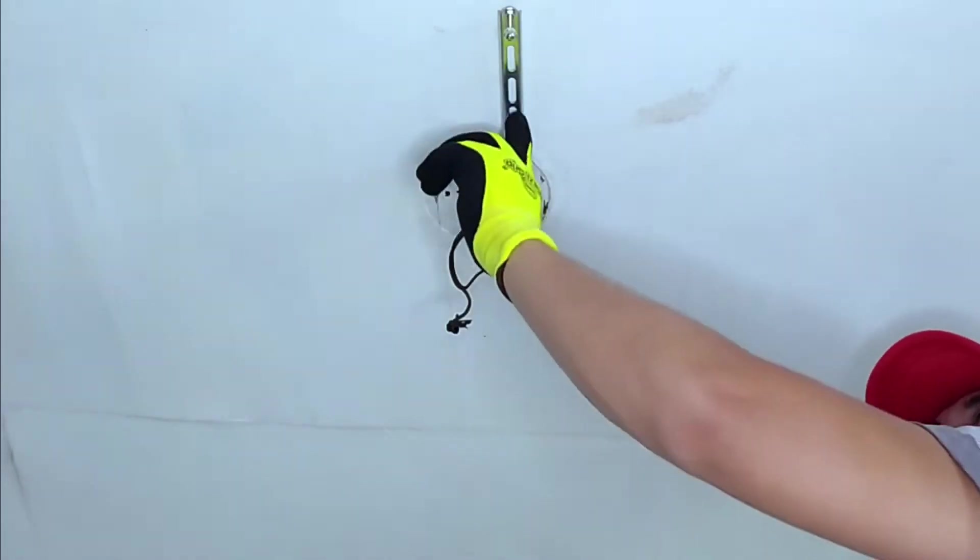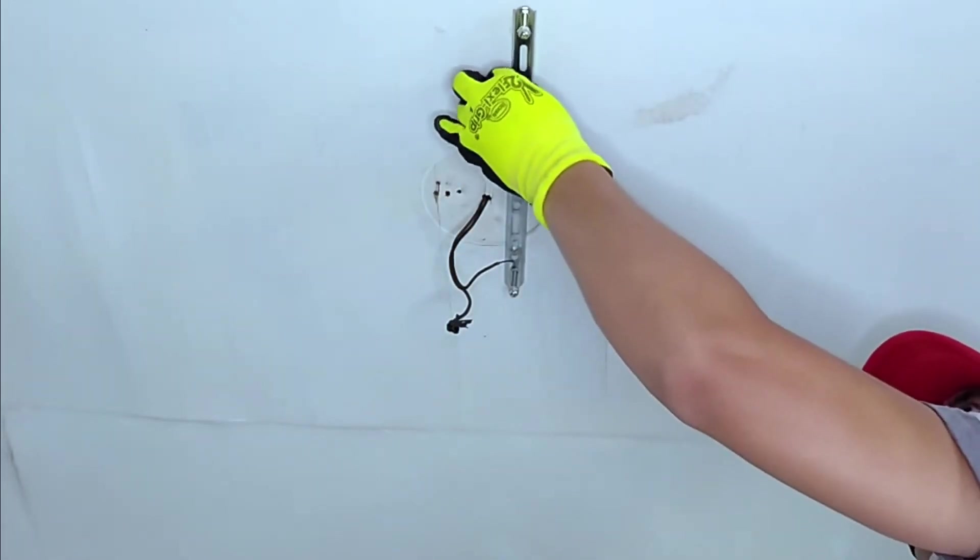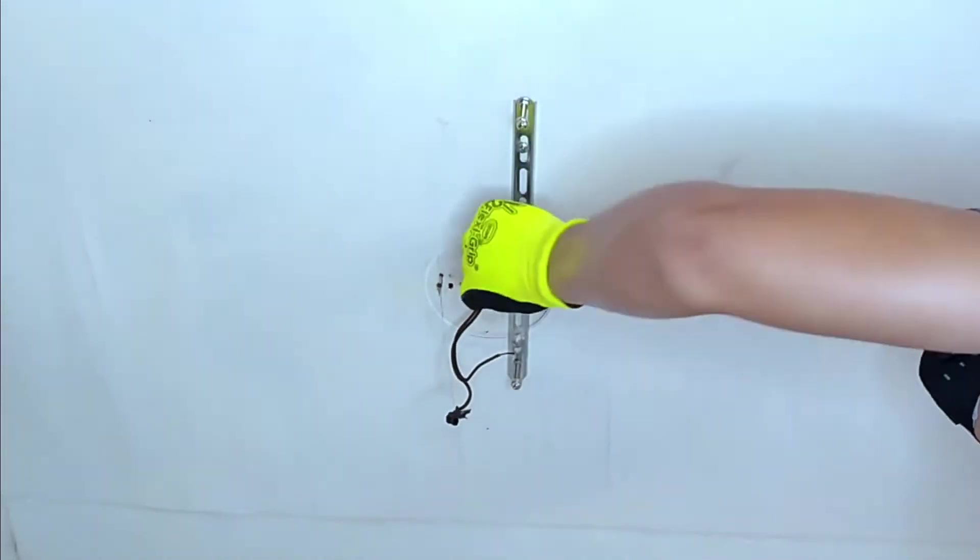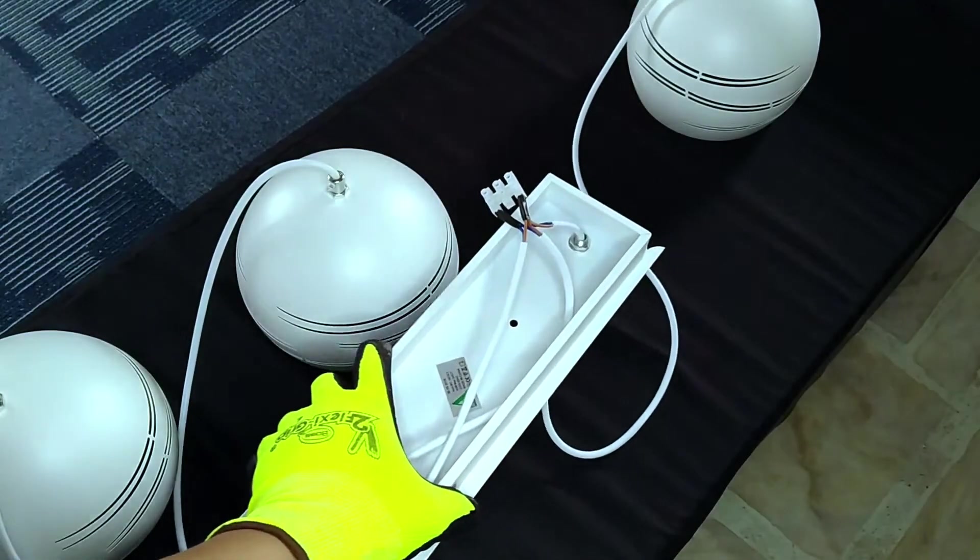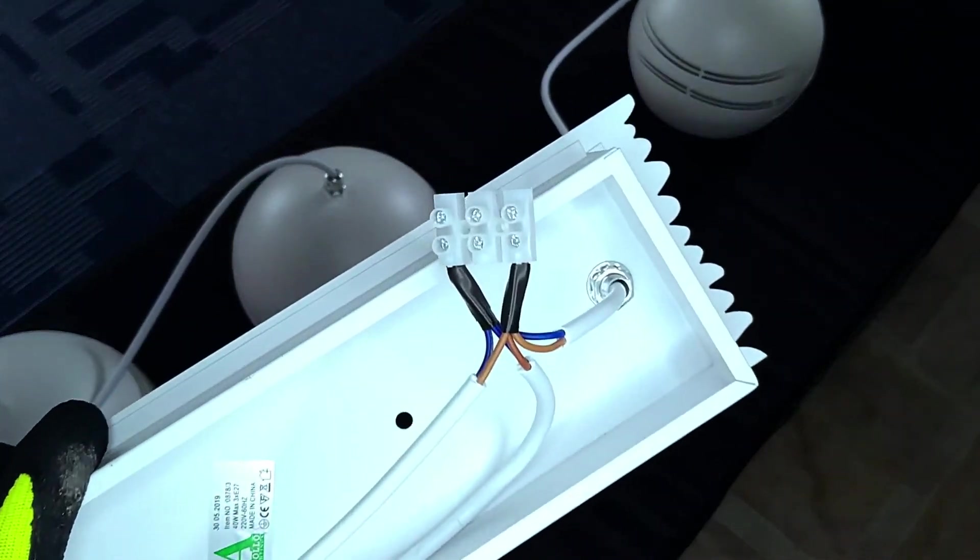Then we mount the bracket into position, making sure that it's square with the room or the dining table below. I won't be able to bring my camera up the ceiling and give you a close-up shot, so let me tell you what I'm about to do.